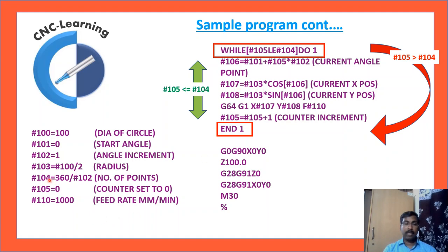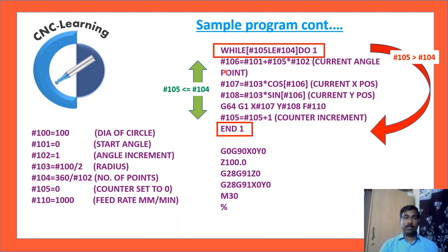#107 equals #103 * COS[#106] — #103 is radius, so this is R cos(theta). #106 is the calculated angle: #101 (start angle) plus #105 (counter) multiplied by the angle increment. As the counter increments, the angle keeps adding up from the start angle, eventually reaching 360 degrees addition to the start angle. This is how the program runs. At the end, the tool comes back to X0 Y0, then Z100, then home command and program end.